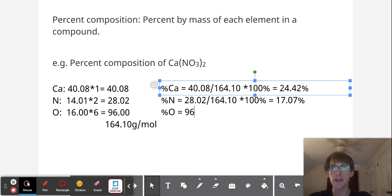And for percent oxygen, this is equal to 96.00 divided by 164.10 times 100%. And that equals 51.17%. So this should get you, oh sorry, it's 58.50%. If you add these up, they should get you to, if it's not exactly 100.00%, it should get you very, very close.